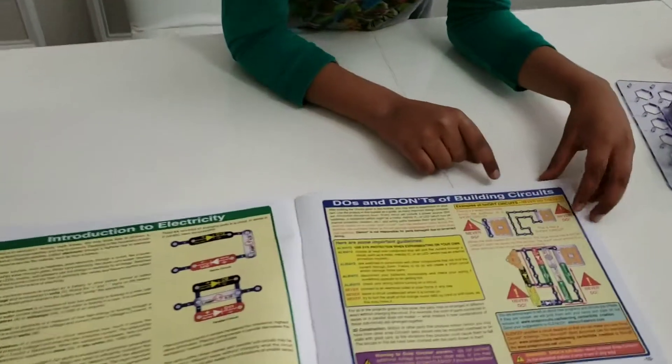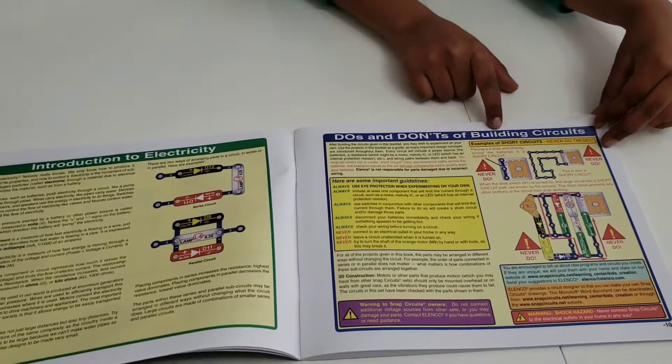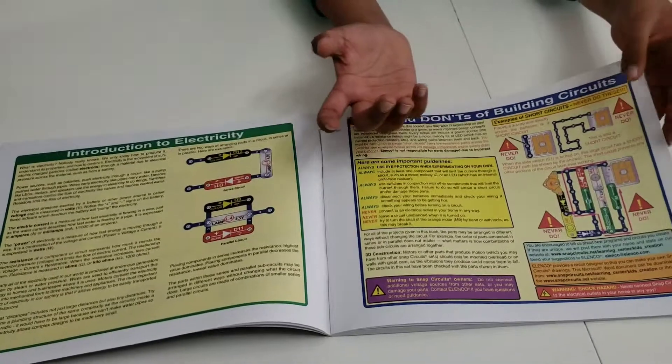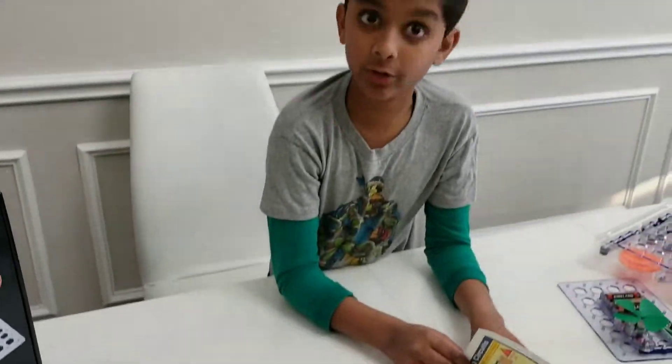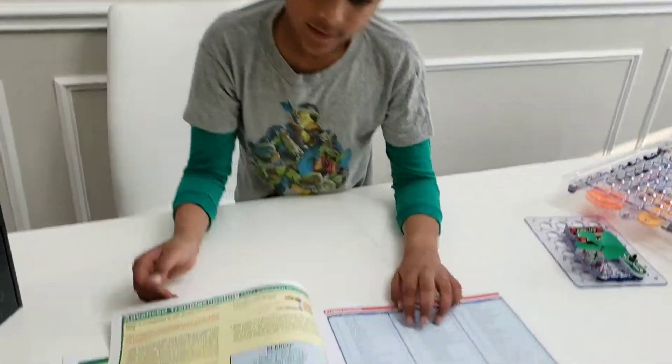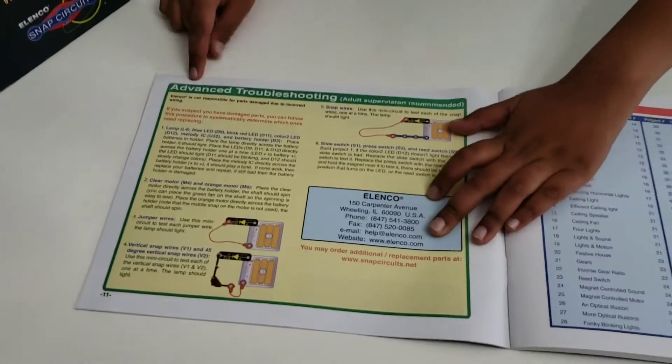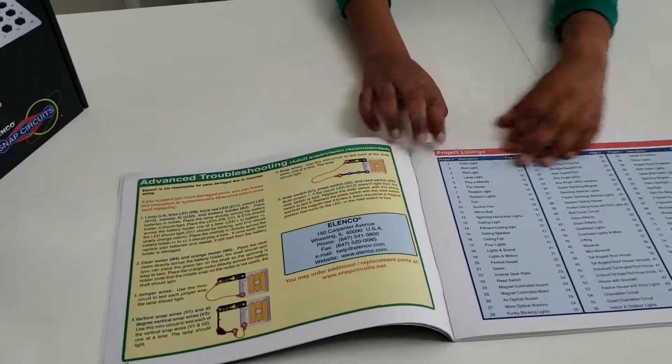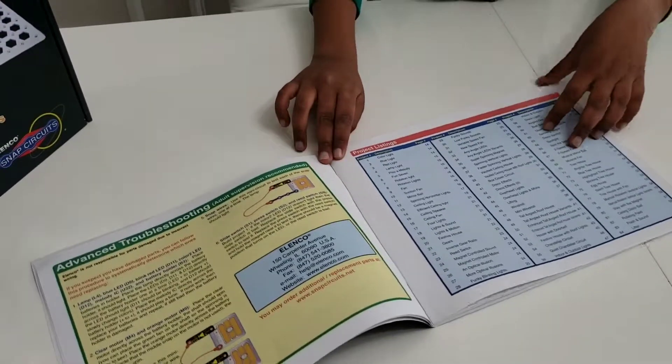And then, here it's the do's and don'ts page, which shows don't do these things, or you might even break your snap circuits, and you don't want that to happen. So then, this is the advanced troubleshooting page, and then here you have the projects.